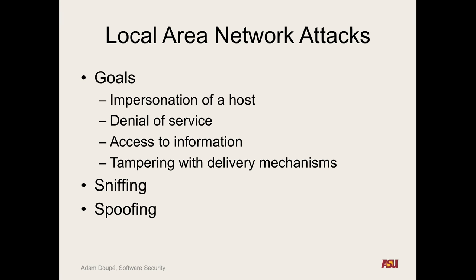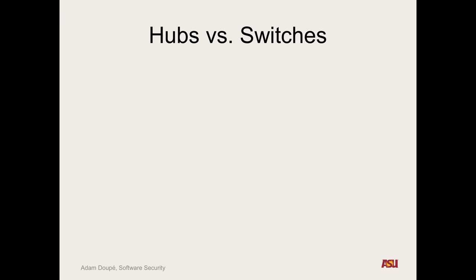Yeah, we could want to spoof. We could want to pretend to be somebody else. We may want to hijack somebody's connection and do kind of a man in the middle thing. So what's the big difference? Now we're on the local area network, we've got to move into the hardware. What is actually on a local area network? What's the difference between a hub and a switch?